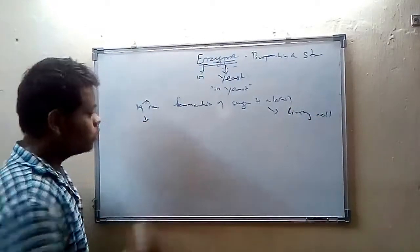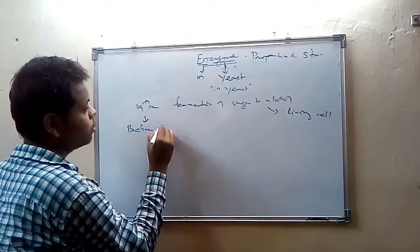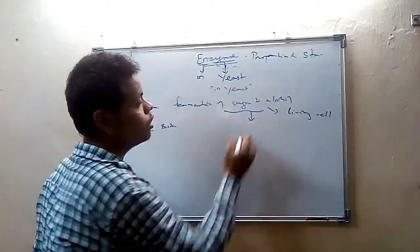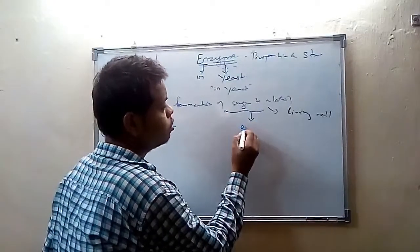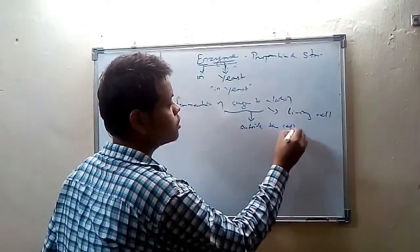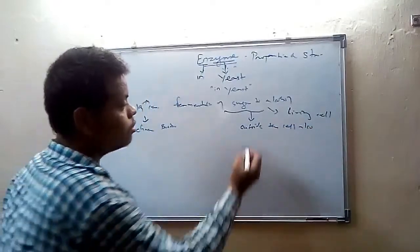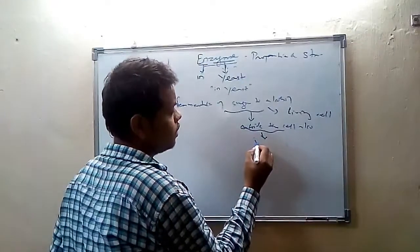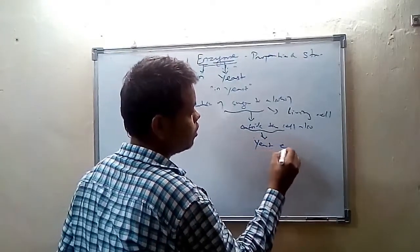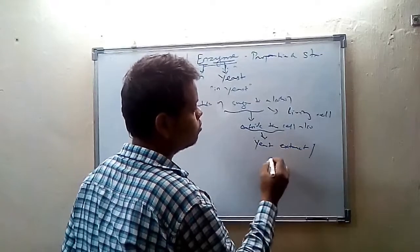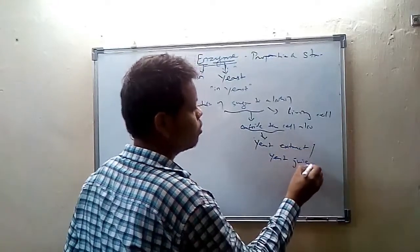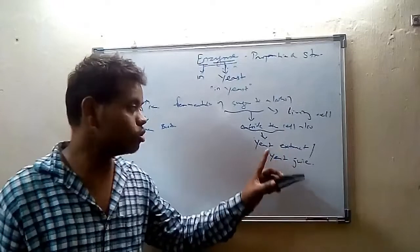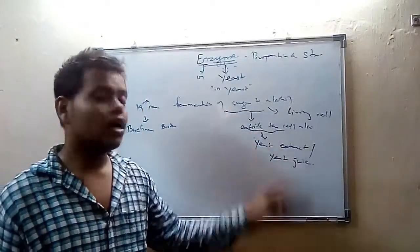But Buchner brothers, two scientists, proved that this fermentation of sugar could be possible outside the cell also. For fermentation outside the cell, they used a yeast extract juice. Through the help of this yeast juice, they performed this fermentation outside the cell.